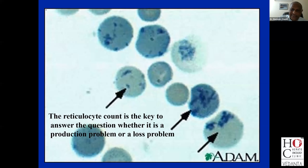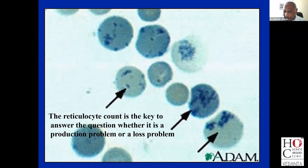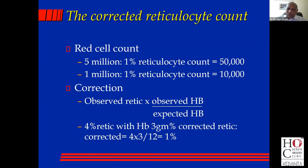What is the single test that can help answer this question? It is the reticulocyte count. If the reticulocyte count is raised at 12%, there's absolutely no sense in doing a bone marrow, because the bone marrow is producing red blood cells. The reticulocyte count is the key to answer the question whether it is a production problem or a loss problem. Nowadays, with the counters, you will get an absolute reticulocyte count. A 5 million red cell count with a 1% reticulocyte translates to 50,000 absolute reticulocyte count.